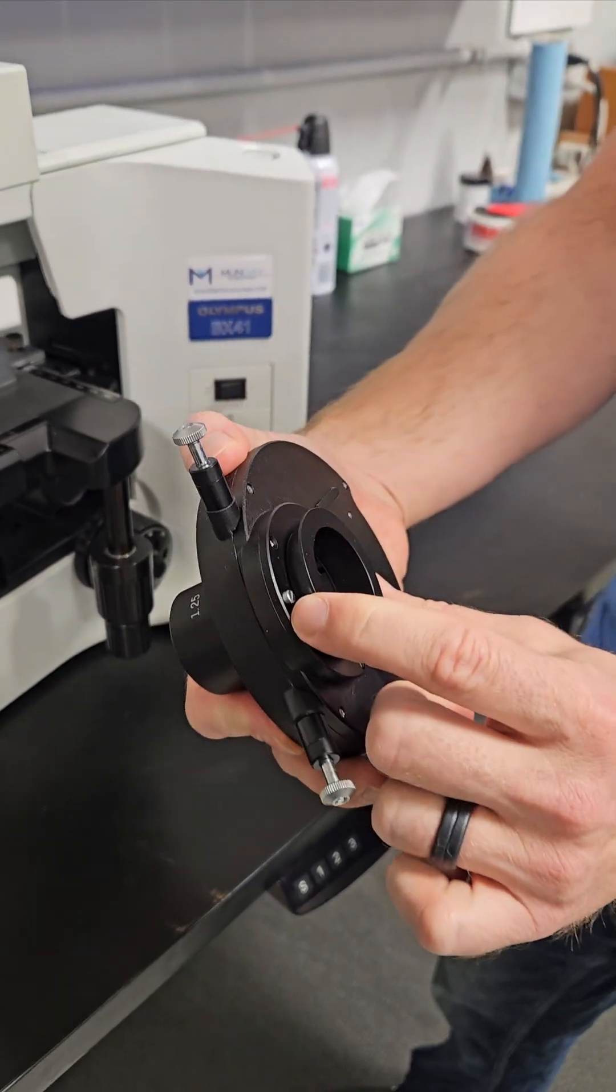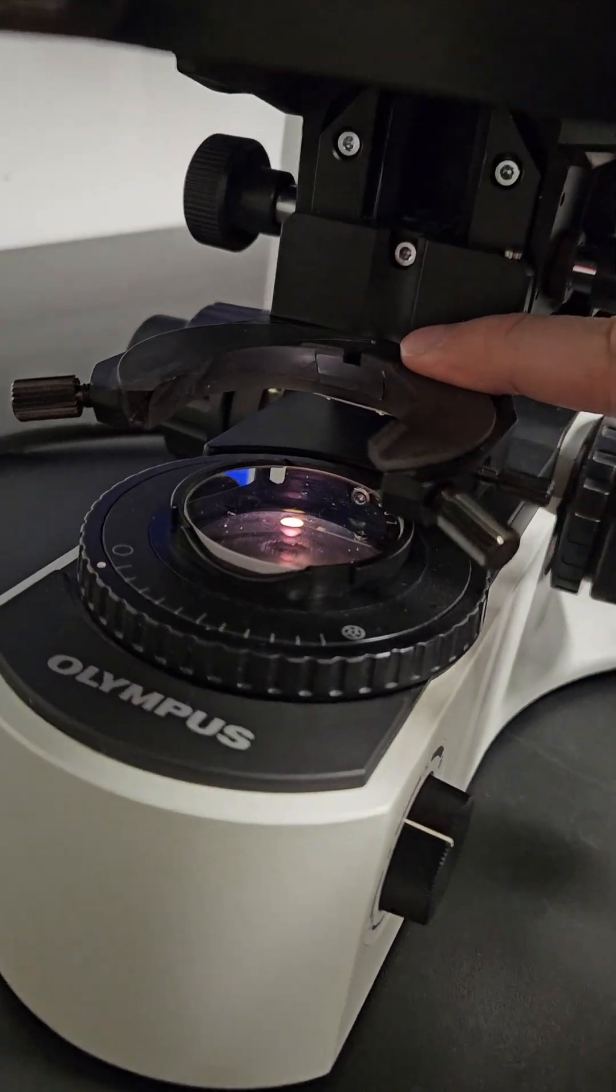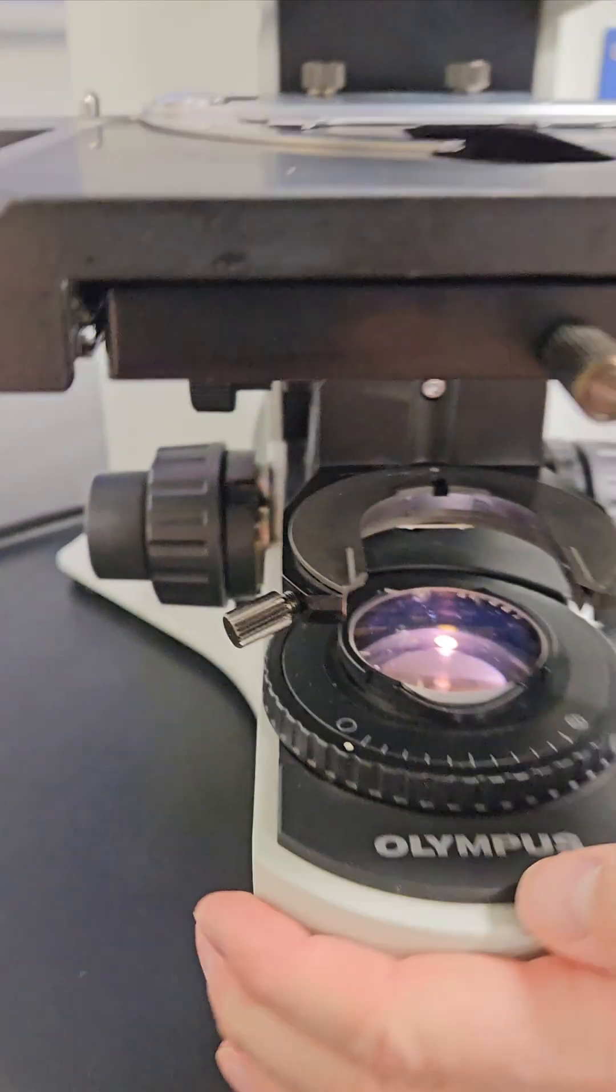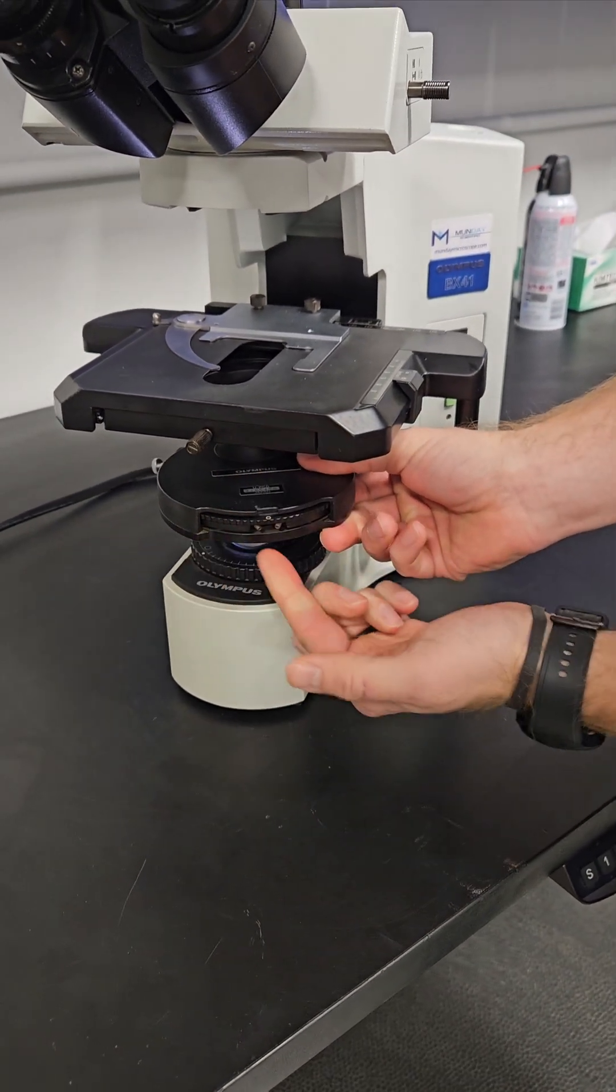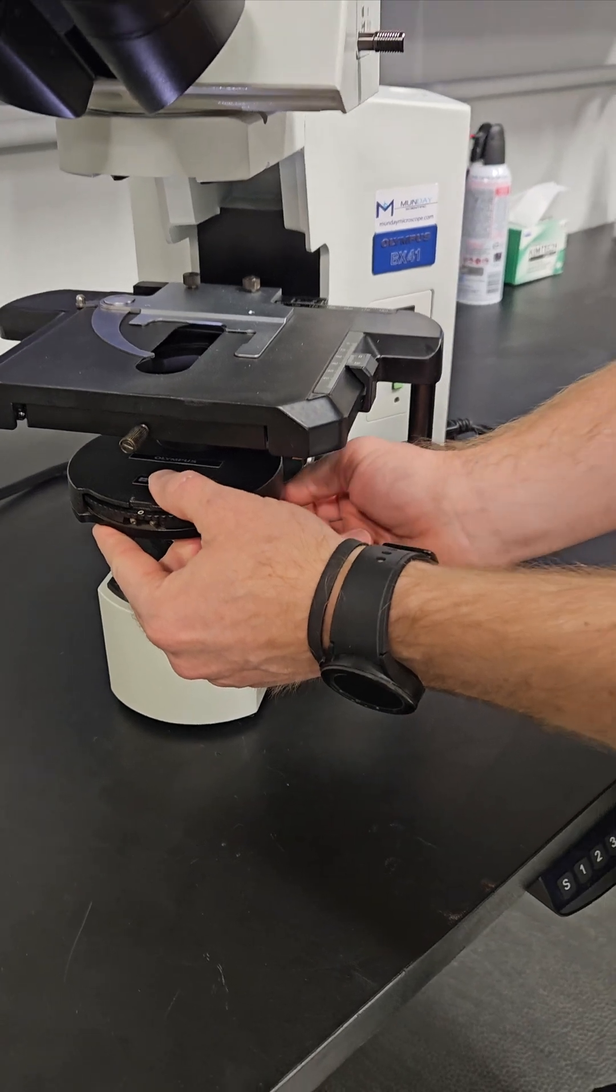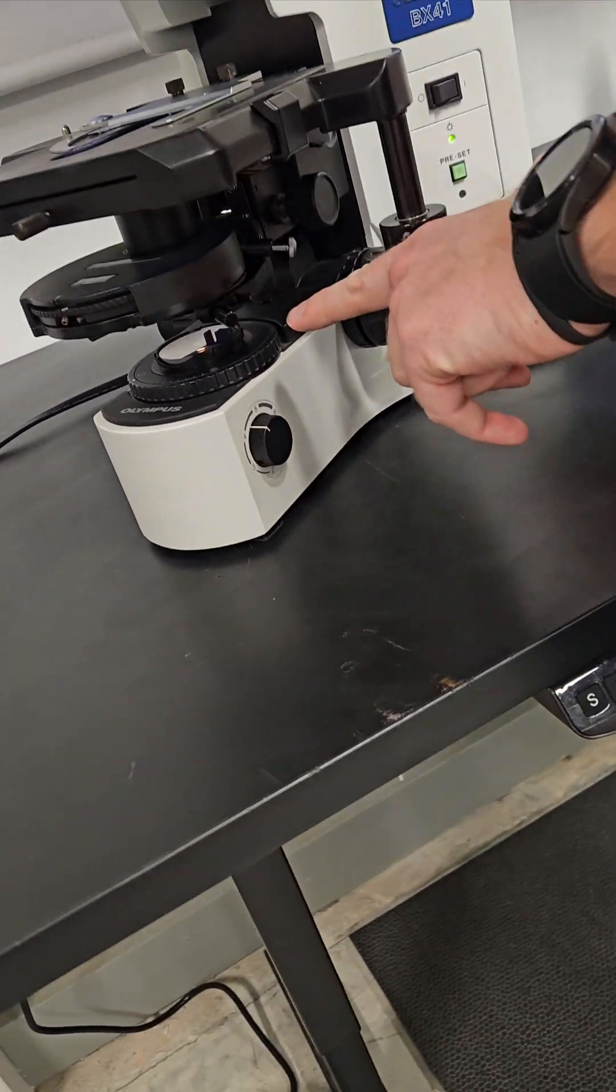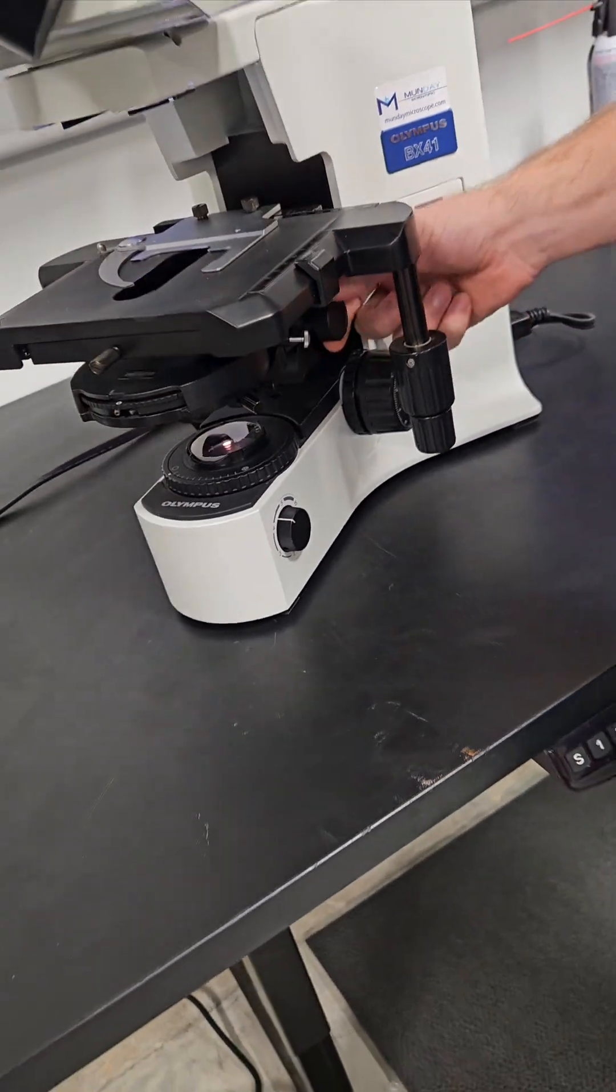So when you put the condenser back in, there's a little pin. This pin is going to line in right here. So the way we'll do it is we'll slide the condenser in, and I put it in a little crooked and then slightly rotate it, and you'll see how it clicks back. Once it clicks back, you tighten that thumb screw and the condenser is seated properly.